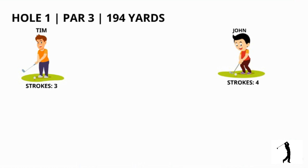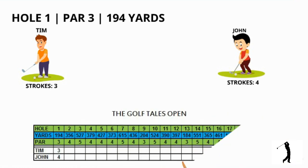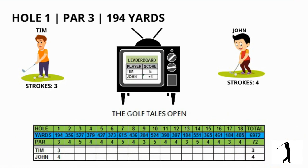We will surely get into the golf lingo in my subsequent videos. For now, let's see how the score is represented on a scorecard. As you may have noticed on the television, you would not always see the full scorecard but just the name of the player and against it an E, or a positive number, or a negative number. So at the end of hole 1, since Tim scored a par, he is even — E — with the hole, and John took an additional stroke so he has a plus 1 against his name.